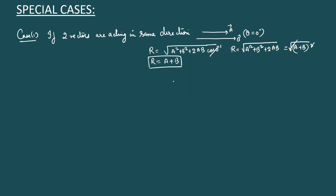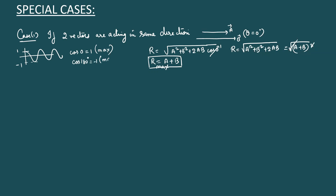So if two vectors are acting in the same direction, you just add them up. This resultant is called the maximum possible resultant, because I have substituted the maximum value of the cosine function, which is 1. The cosine function oscillates between +1 and −1; cos0° = 1 is the maximum value, and cos180° = −1 is the minimum. Since I substituted the maximum value of cosine, the resultant is also maximum.